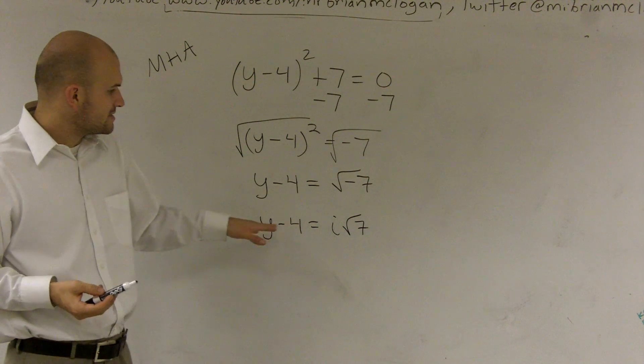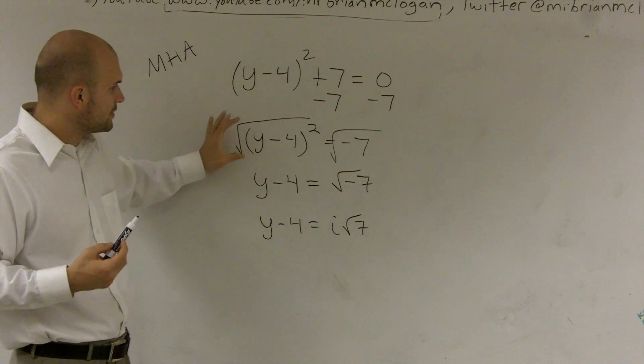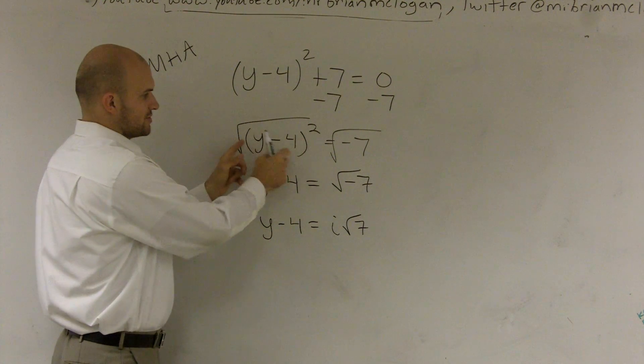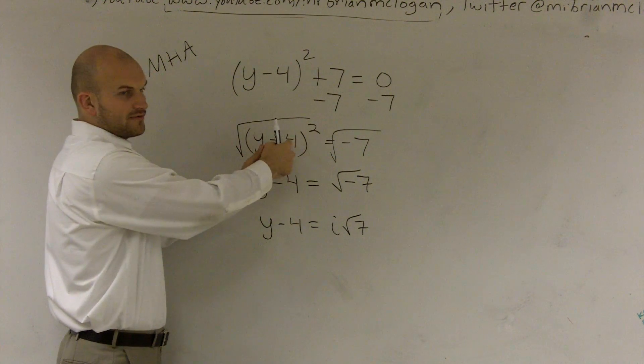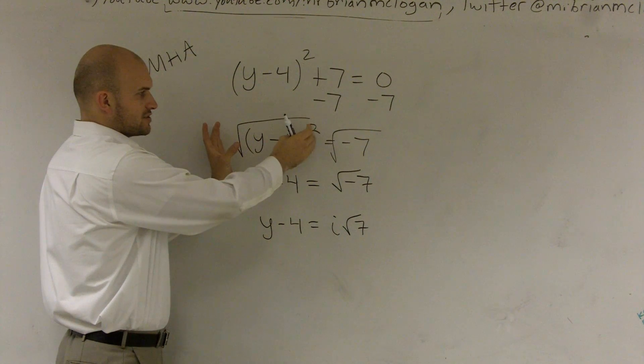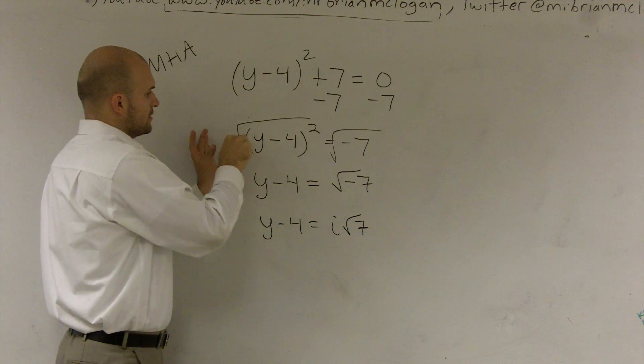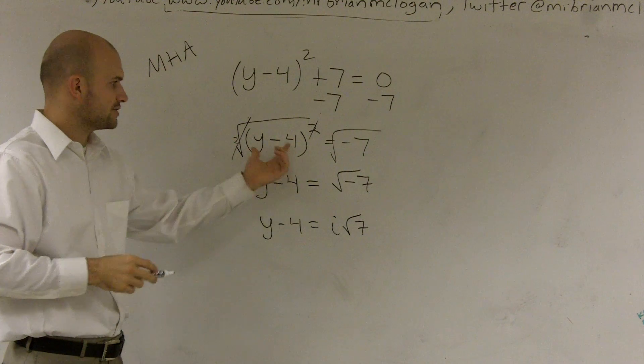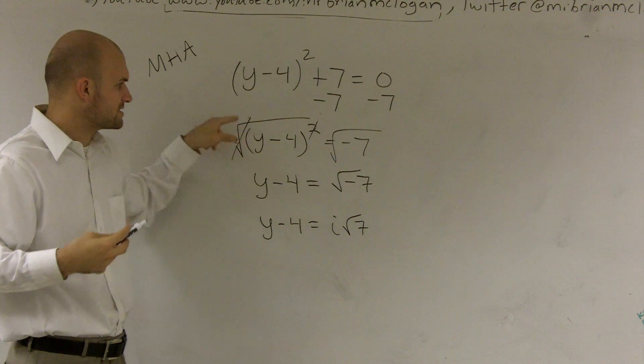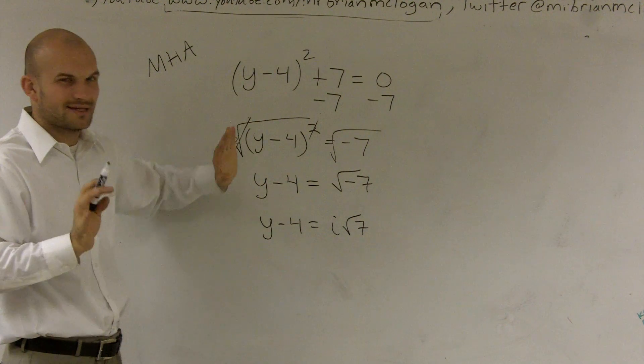Then the last part is, now, since I've received that, remember when you're taking the square root, this is all one term. So you can't take the square root of y and the square root of 4. It's all one term you're taking. You're canceling out the square and the square root. So you're just left with y minus 4. A lot of students want to take the square root of y and negative 4. Can't do that.